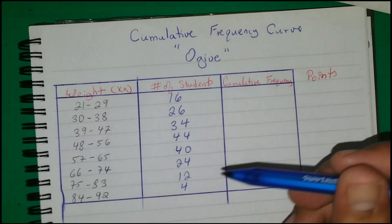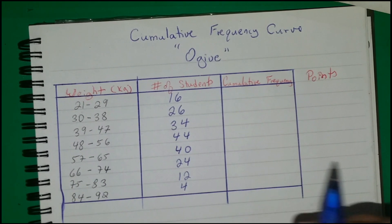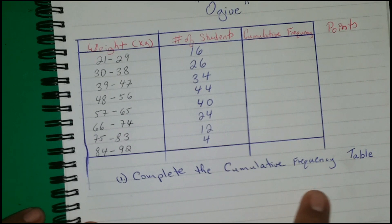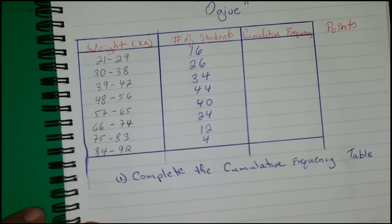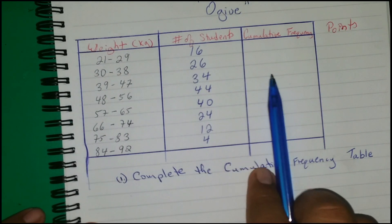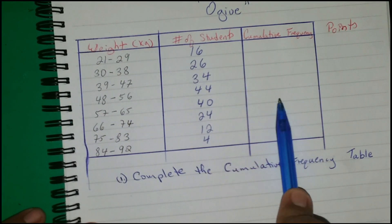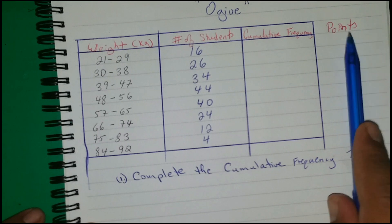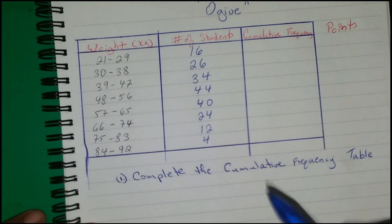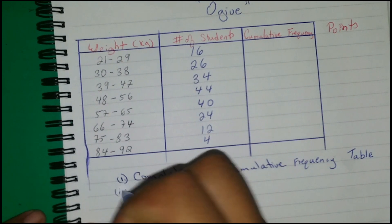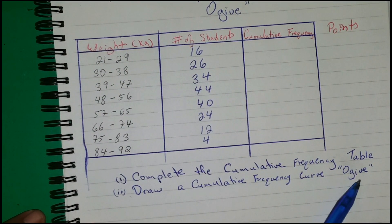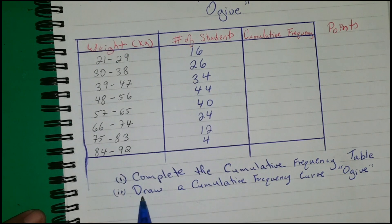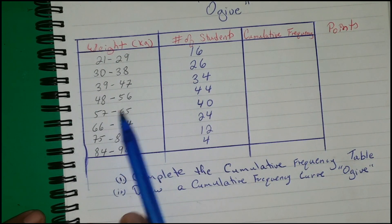The first question asks us to complete the cumulative frequency table. What we need to do is include the cumulative frequency column, and beside it I also like to put the points. Those points will help us with the second question, which is to draw a cumulative frequency curve or ogive. So let's proceed.